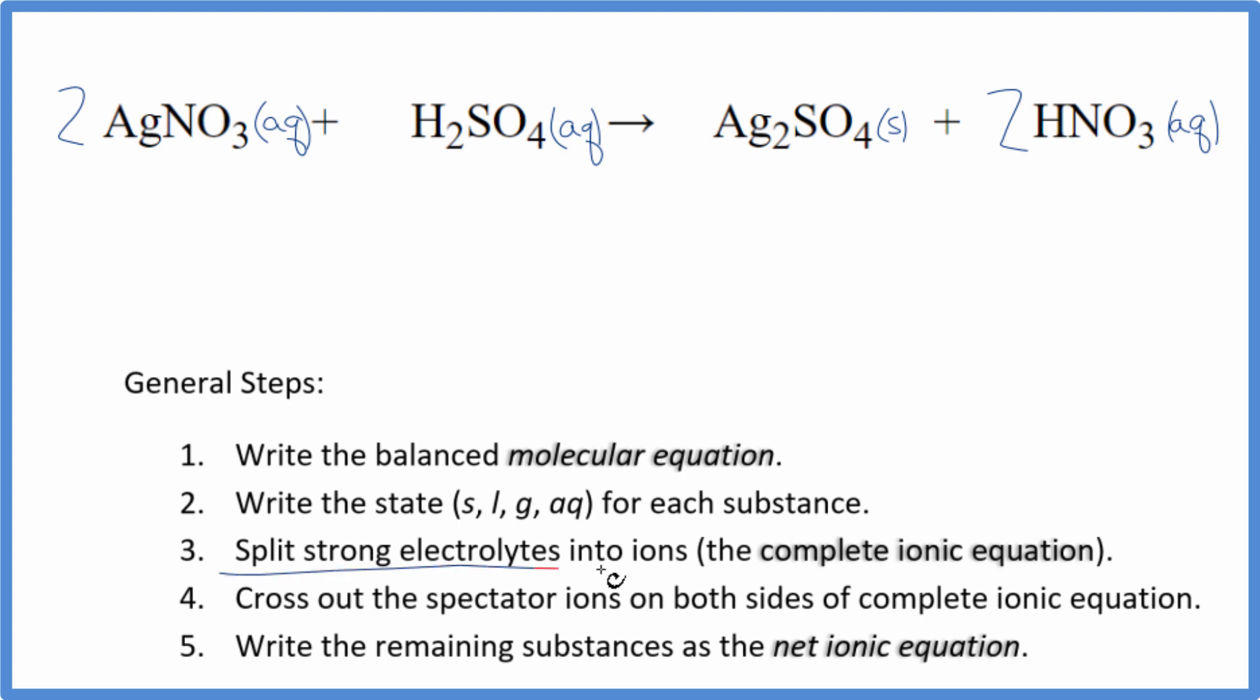Now we split the strong electrolytes into their ions to get the complete ionic equation. Silver is always one plus, and nitrate is always one minus. So I have two silver ions plus two nitrate ions, NO3 minus. Hydrogen on the periodic table is one plus, and the whole sulfate is two minus. So I have two hydrogen ions, two H plus, and one sulfate.